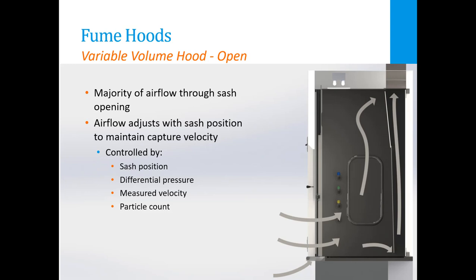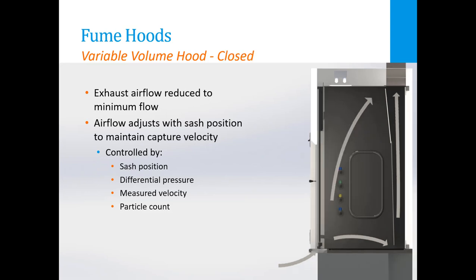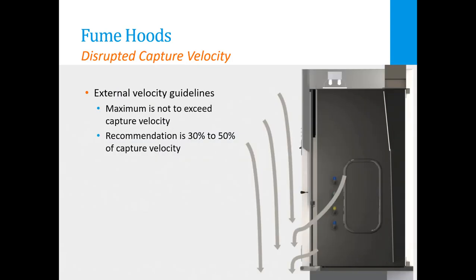The change in volume can be controlled by a number of different methods, including sash position, differential pressure, measured velocity, or even particle counts within the hood. In the closed position, the hood operates at a minimum flow rate to maintain negative pressurization within the hood at a set level. With either type of hood, it's crucial to maintain velocity through the face of the hood. This ensures proper operation and containment of contaminants.